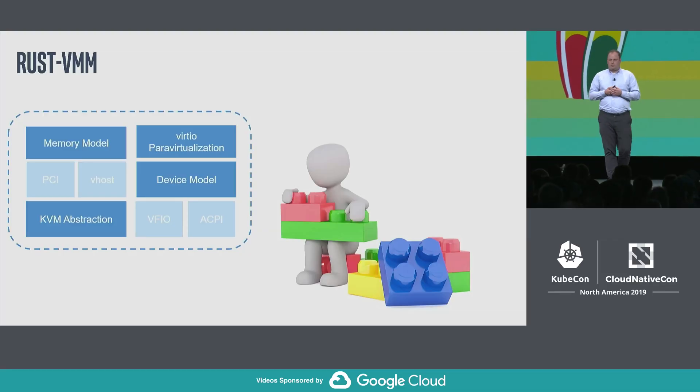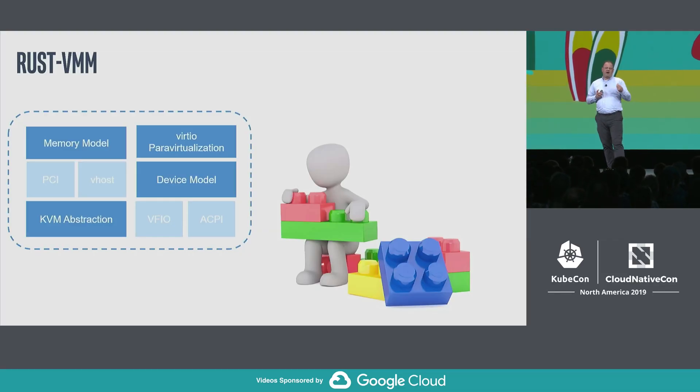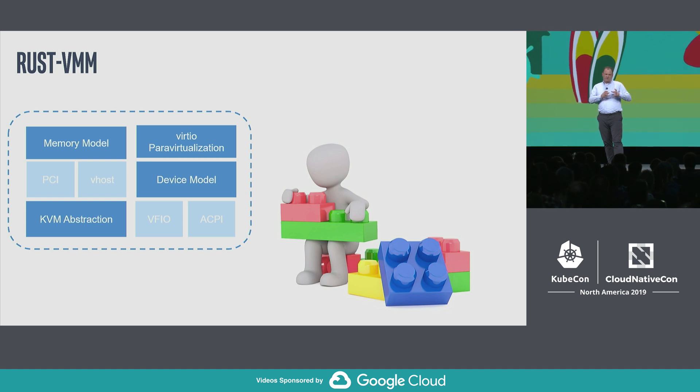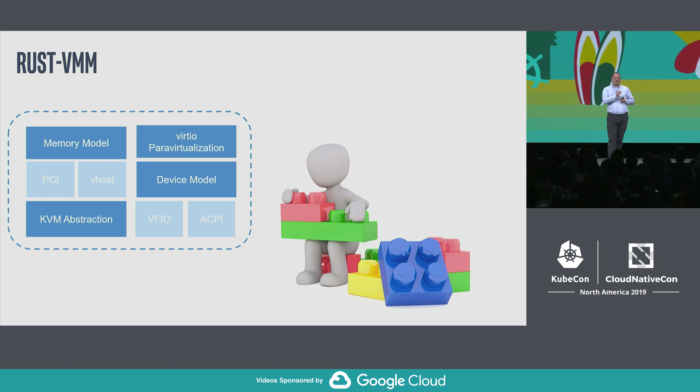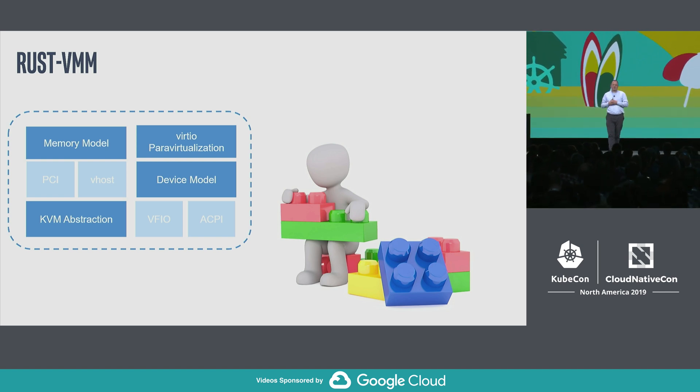We have to go back to the basics. One of the things we've been starting in public is a project called RustVMM, where rather than having a complete virtualization solution like the fourth-grader build, we're going back all the way to second grade, where we're building a bunch of pieces and components so that we can recompose them in a different way. We want to be able to compose custom hypervisors, custom pieces of software that can provide isolation, just exactly for the task we need, rather than big bloated pieces of software.